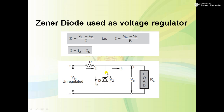The Zener diode is connected in the reverse biasing condition. We are considering Vin as unregulated, meaning not constant. The aim of this circuit is to get the output voltage at a constant level without any fluctuation or variation.